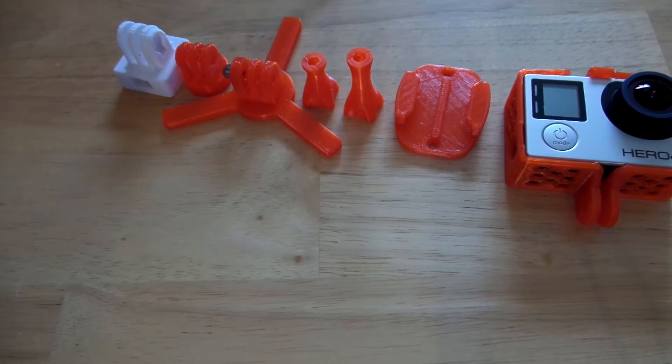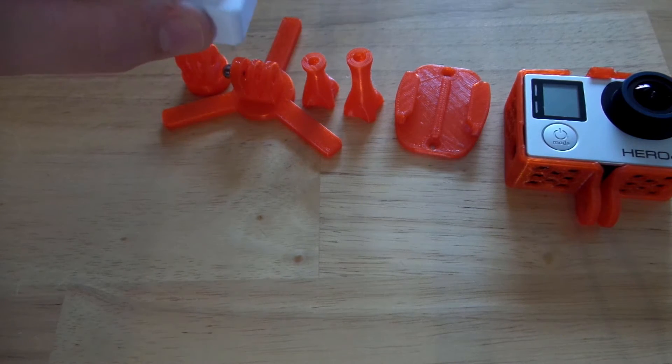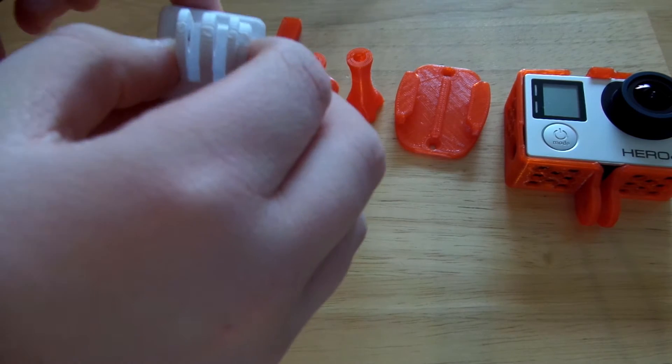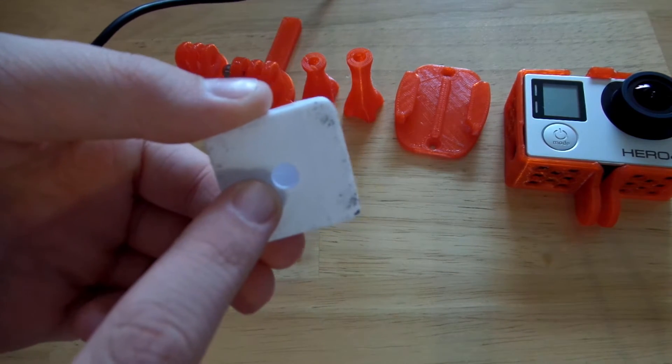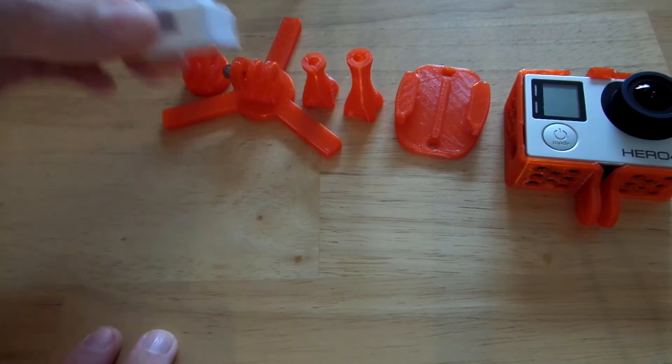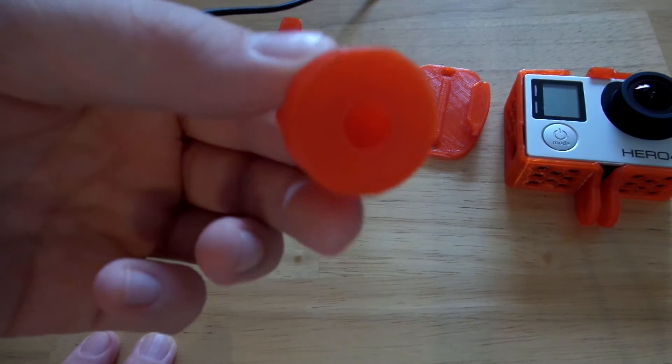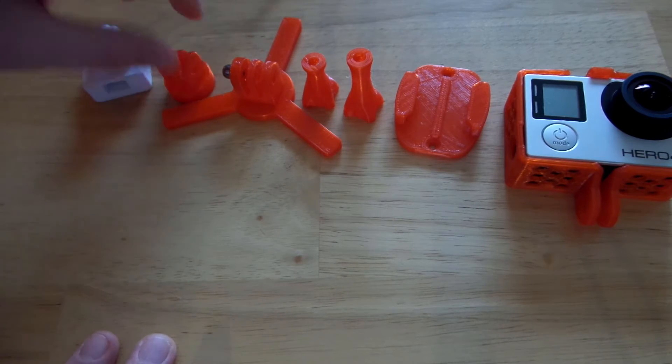This is something that goes onto the tripod, actually what I'm using to film right now. It makes it so you can use your GoPro on a tripod. There's a problem with it - that hole is too big to go into the tripod, so it doesn't work. Same with this. This is a tripod thing too. I thought it would work, but it didn't.